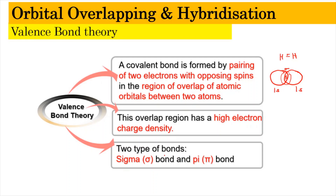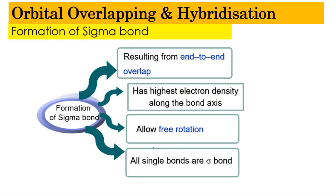So let's look into the sigma bond. The sigma bond results from end-to-end overlap — a real overlap that visibly occurs. It involves a high electron density along the bond axis. Since single bonds are sigma bonds, it is quite easy for molecules having a single bond to rotate.